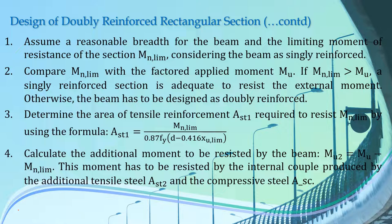We adopt a doubly reinforced beam because the depth of our beam cannot be increased due to certain restrictions such as architectural requirements. If you are given a certain depth of beam, assume a reasonable breadth first, and then calculate the limiting moment of resistance of that section considering the beam is singly reinforced. So first, calculate the limiting moment of resistance for a singly reinforced section. Based on the type of load on our beam, calculate the ultimate bending moment or factored applied moment.